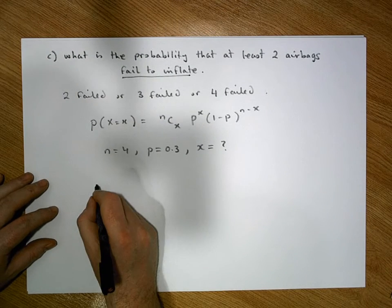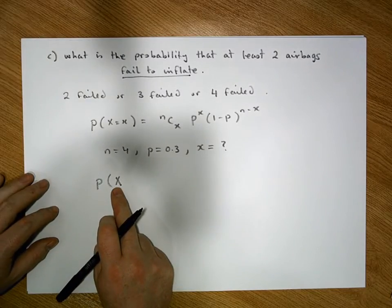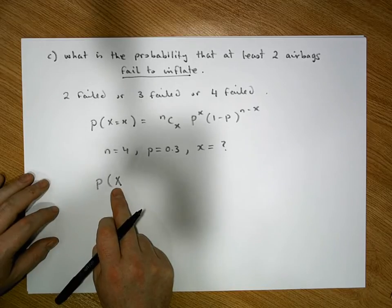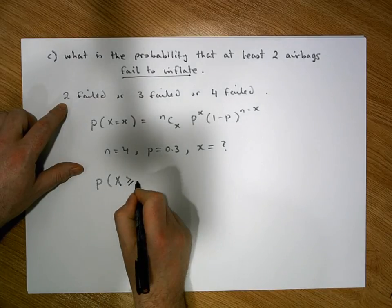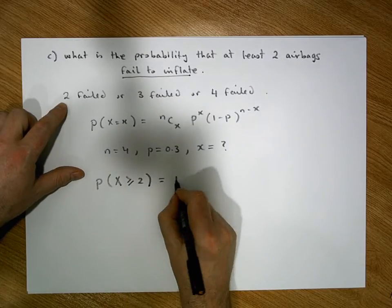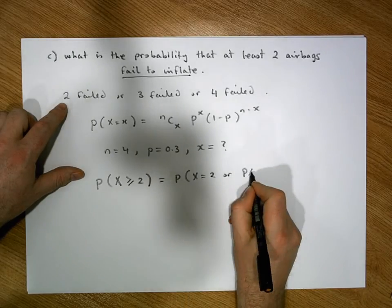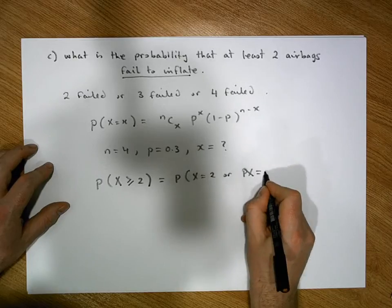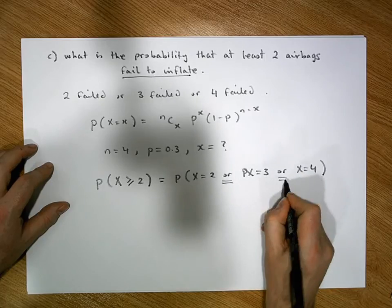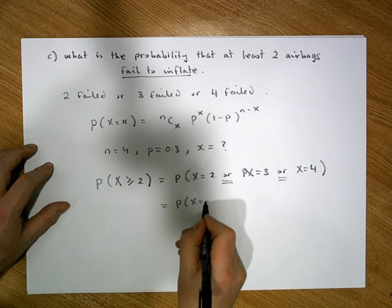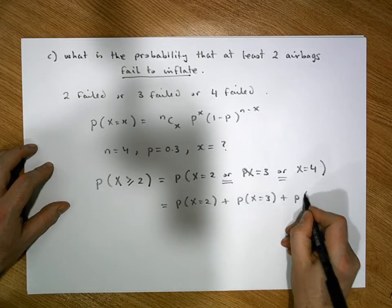More formally: the probability that at least two airbags fail to inflate in a car crash equals the probability that x equals two, or x equals three, or x equals four. By the addition rule, this becomes P(X=2) plus P(X=3) plus P(X=4).